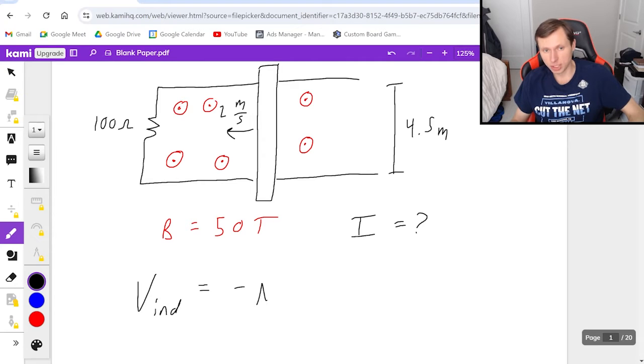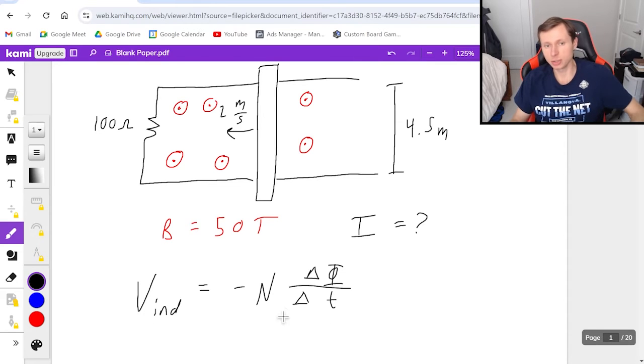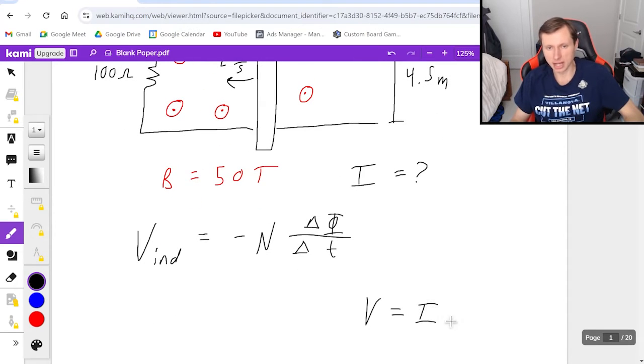V induced, induced voltage, equals negative N delta flux over delta T. And so to find the magnitude of the current, we're going to find the voltage first and then eventually use Ohm's Law, V equals I times R to find the current. But first we have to find the voltage.